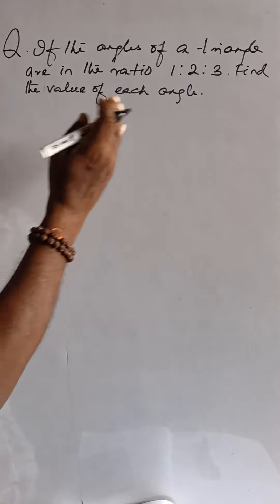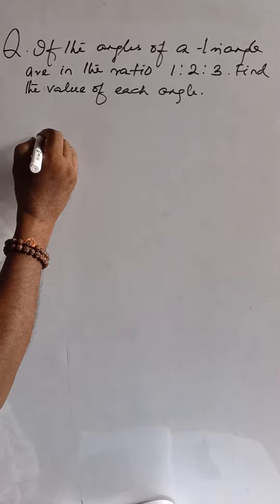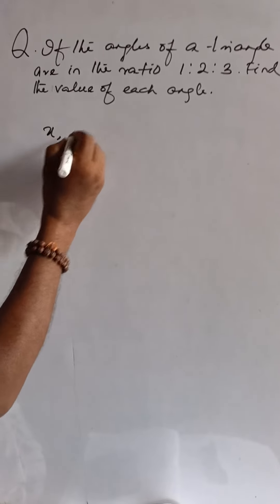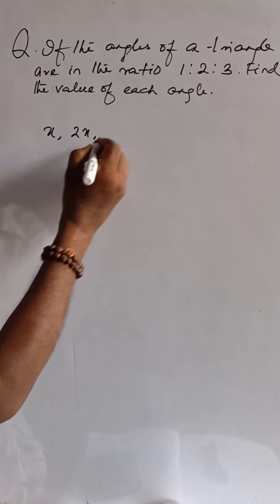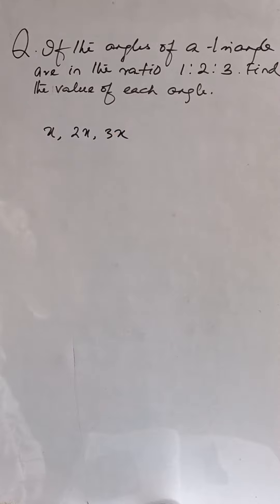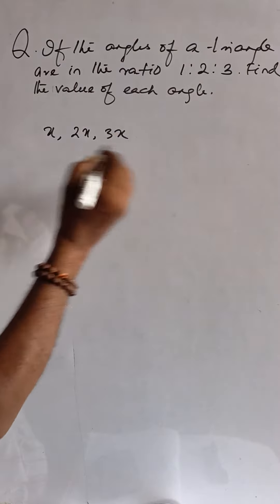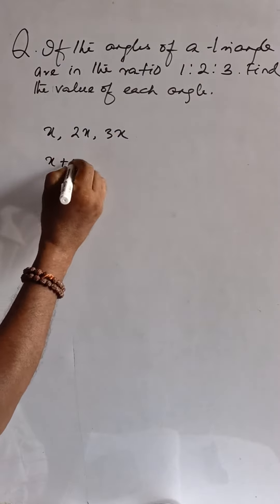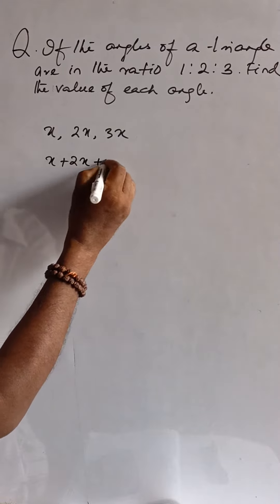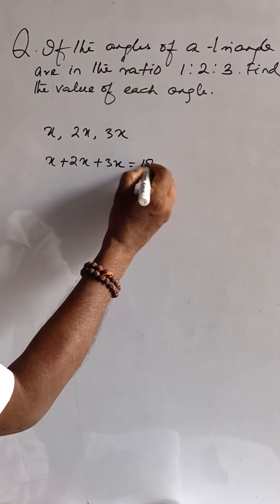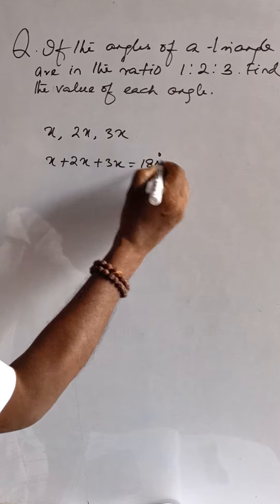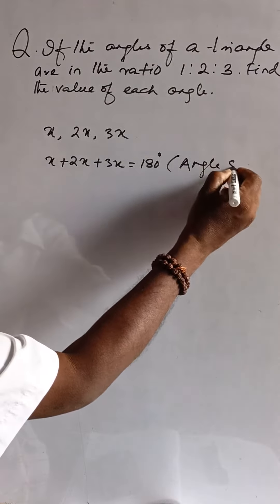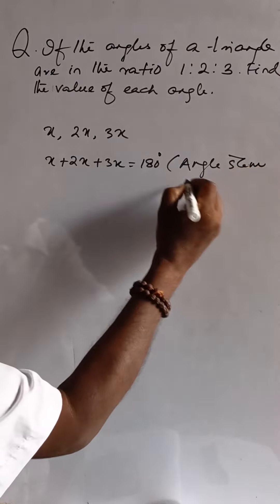Now the angles are in ratio, that is x, 2x, and 3x. Then sum of the angles is x plus 2x plus 3x is equal to 180 degrees. That is the angle sum property.